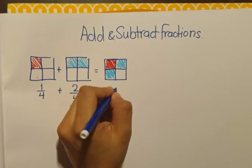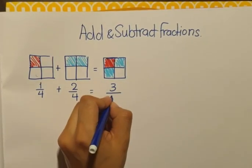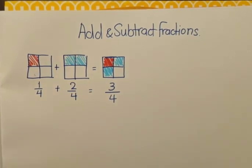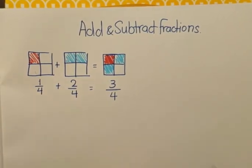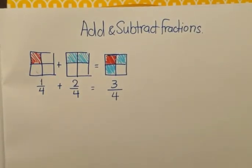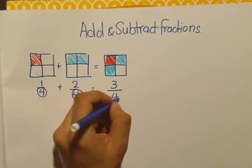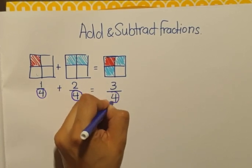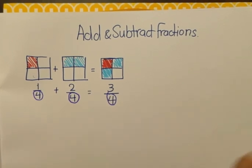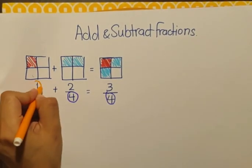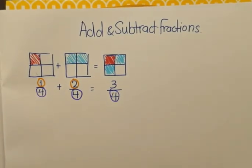The shaded parts are three and the total number of parts in the shape are four. Now, notice something very important. The denominator in both the numbers are the same and I move the denominator exactly as it is to the answer. So basically, all I did was add the numerators. One plus two equals three.